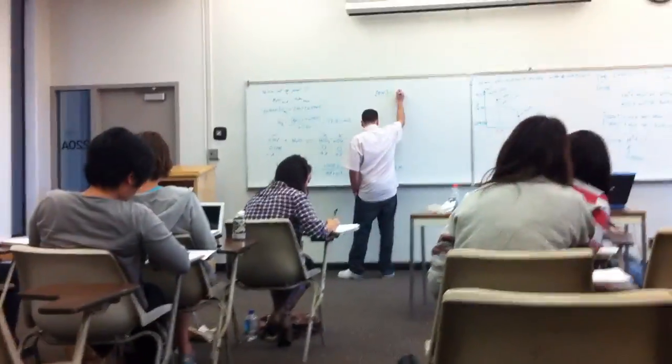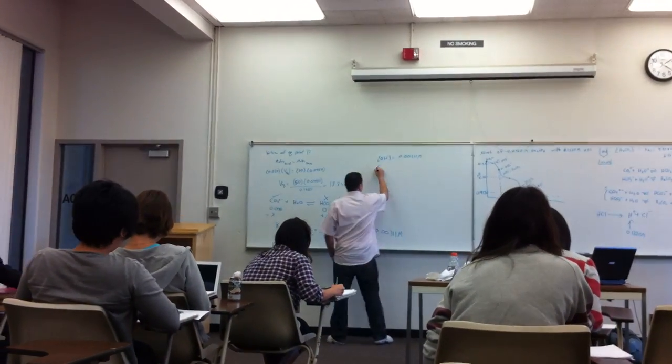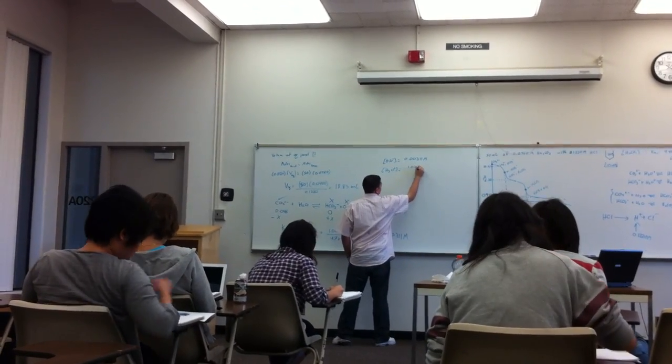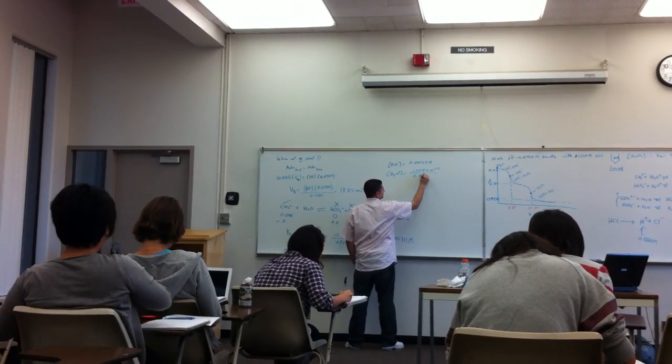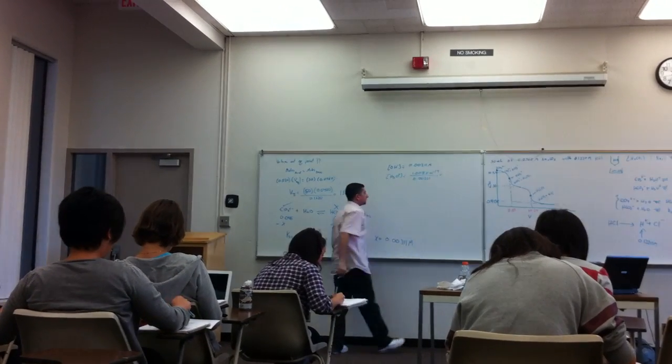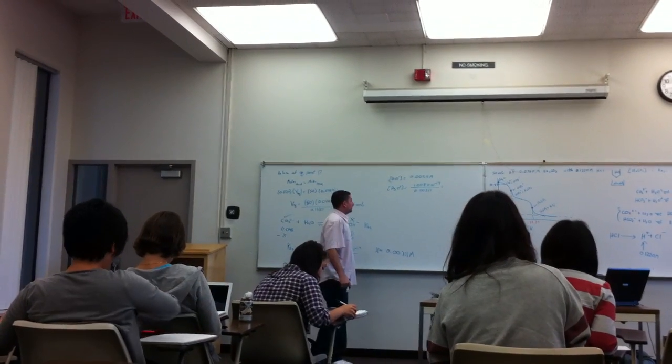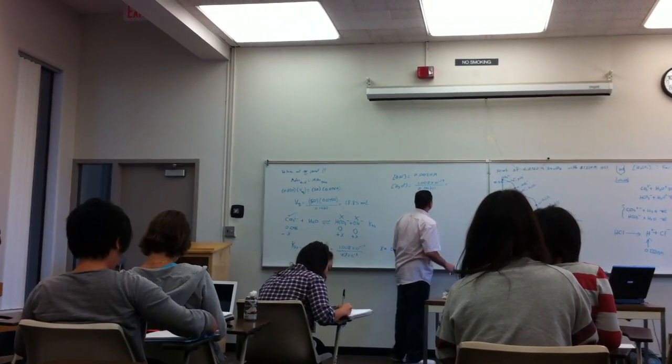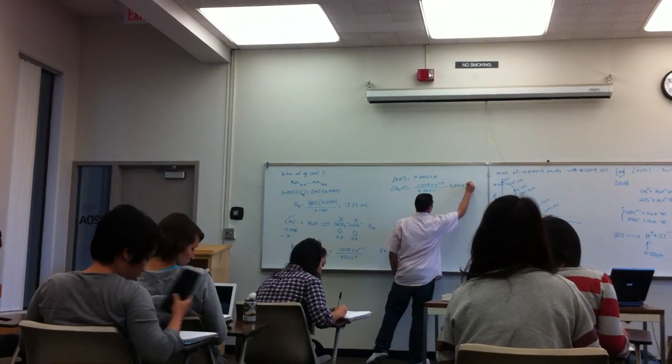So OH concentration equals 0.00311 molar. Concentration of H3O, however, equals 1.0 times 10 to the negative 14 divided by this number, which equals to what?